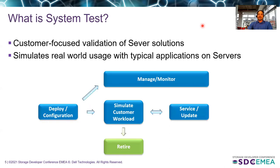We also simulate the way customers deploy in a data center — we deploy and configure the server, deploy the application, and using workload generators, simulate the customer workloads on the server. We then monitor the system over 120 hours. During the simulation, if there are any software updates, we perform service updates and continue running the workloads. At the final phase, we retire the system. The main focus is to use the same workloads the customer uses and simulate them in the lab on the same server.